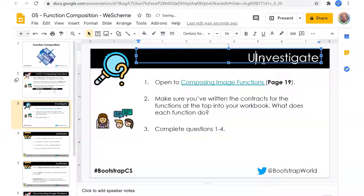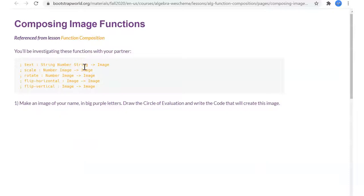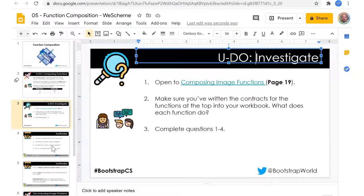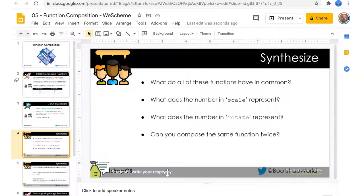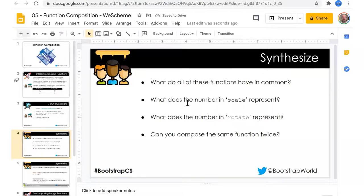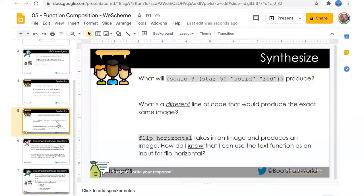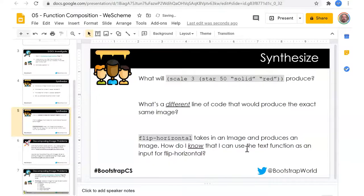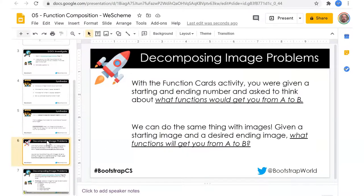So we'll try to get a very short video and let them do a lot of that. Write in the contract for the functions on top of your workbook. The contract is there so I'll just point that out. What do all these functions have in common? What does the number in scale represent? What does the number in rotate represent? Can you use the same function twice? I will demonstrate that. What's a different line of code, same result? Flip horizontal takes an image and produces an image. How do I know that I can use text function as an input for flip horizontal?